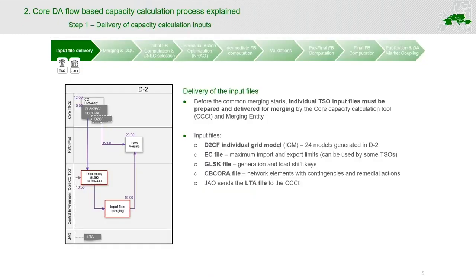The first process of the capacity calculation is the provision of the input data. Input data are provided by core TSOs and also by JAO. JAO provides information about the long-term capacities that were sold — in other words allocated — during the yearly and monthly auctions. This needs to be done at the beginning of the whole process.